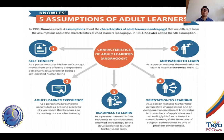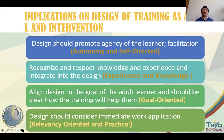These assumptions have implications on how we design our training activities and interventions. First, adult learners are autonomous and self-directed, so the design should promote agency — we need to know what participants would like to learn. The role of the trainer is to facilitate learning and promote the autonomy and self-directedness of the learner. The second implication is with respect to experiences and knowledge: the designer should recognize and respect the knowledge and experience of participants by integrating them into the design and into the selection of activities and methodologies.